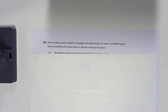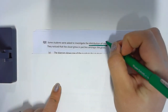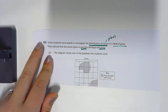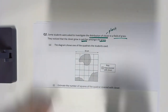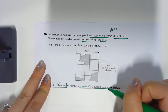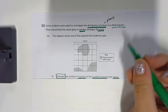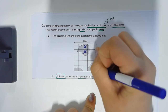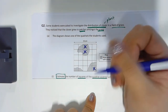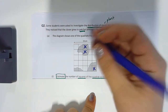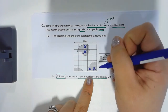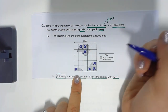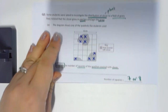Question two: some students investigated the distribution of clover in a field of grass. They noticed clover grew in patches. We need to estimate the number of squares in the quadrat covered with clover. As I count, I put a cross so I don't double count. Three squares are completely filled. The rule is if more than 50% is covered, we include it — giving us seven, potentially eight squares.